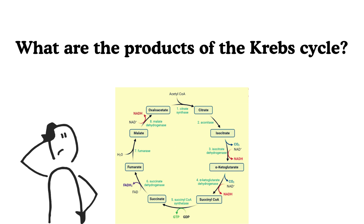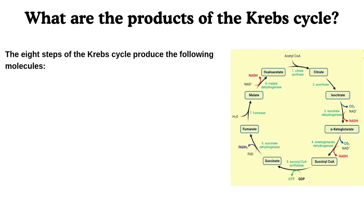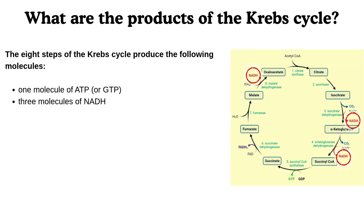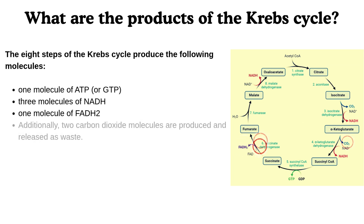What are the products of the Krebs Cycle? The eight steps of the Krebs Cycle produce the following molecules: one molecule of ATP, three molecules of NADH, and one molecule of FADH2. Additionally, two carbon dioxide molecules are produced and released as waste.